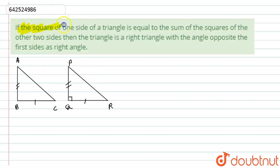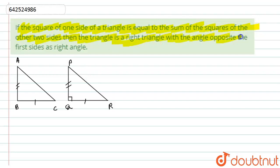The question states: if the square of one side of a triangle is equal to the sum of the squares of the other two sides, then the triangle is a right angle triangle, with the angle opposite to the first side being the right angle. This we have to prove.